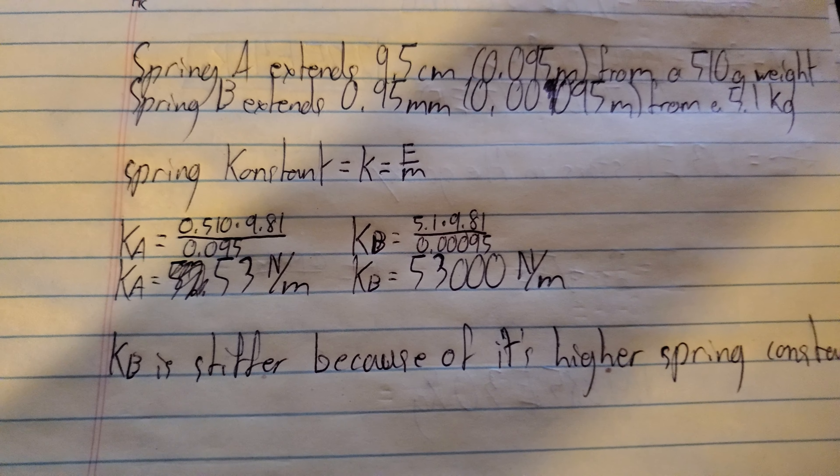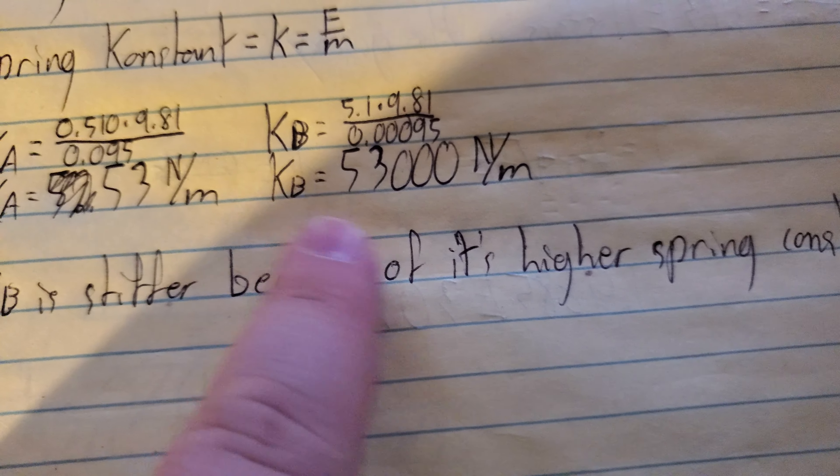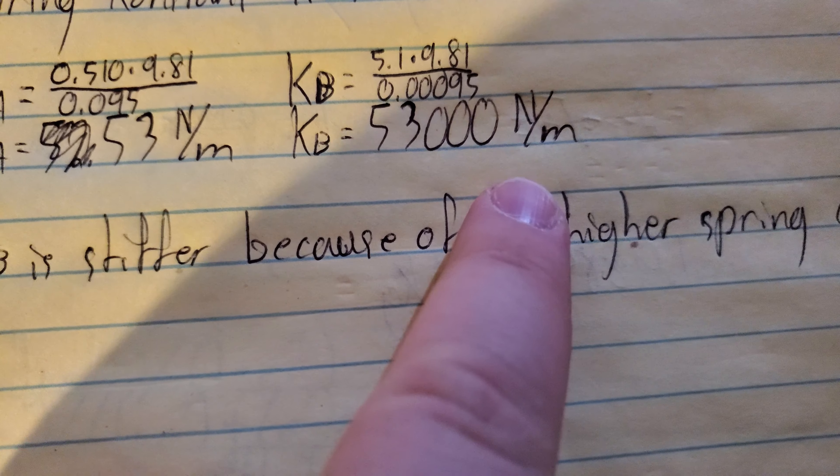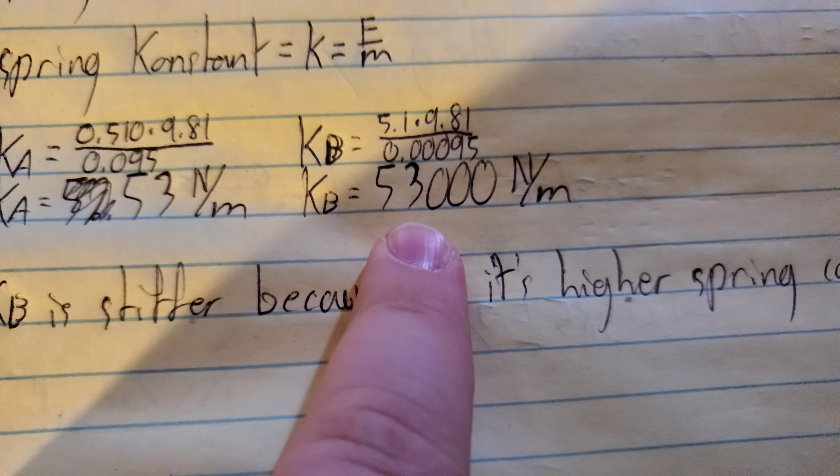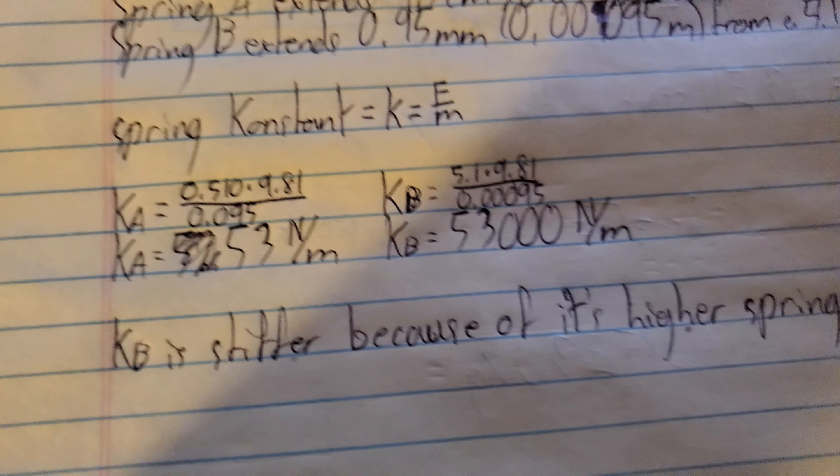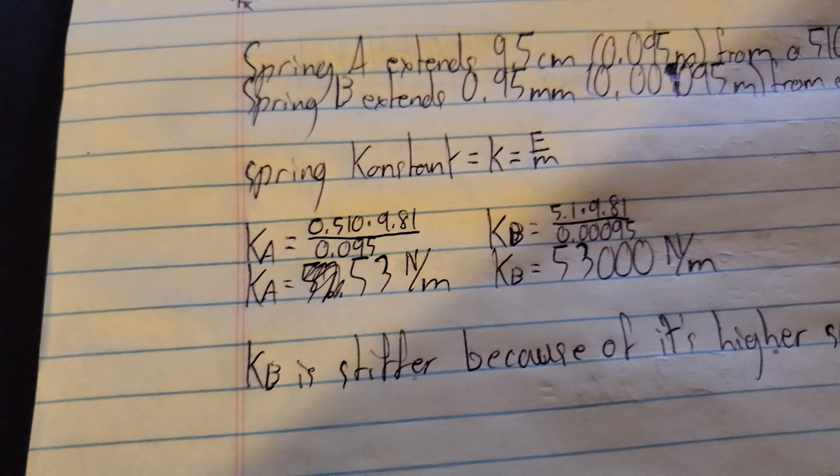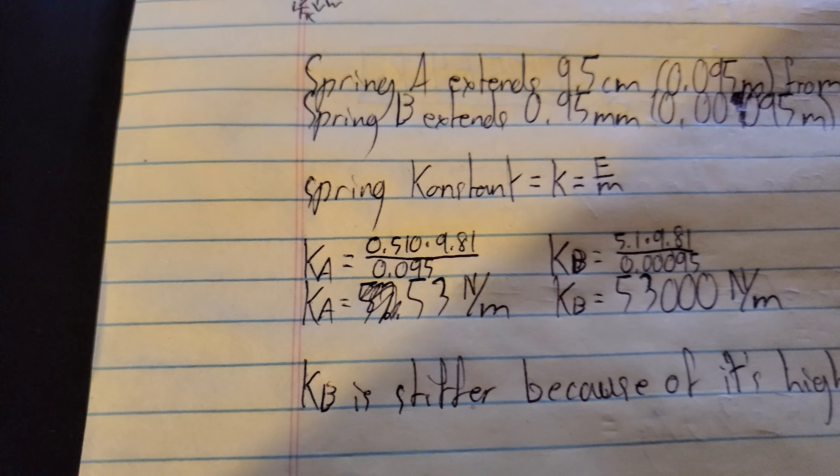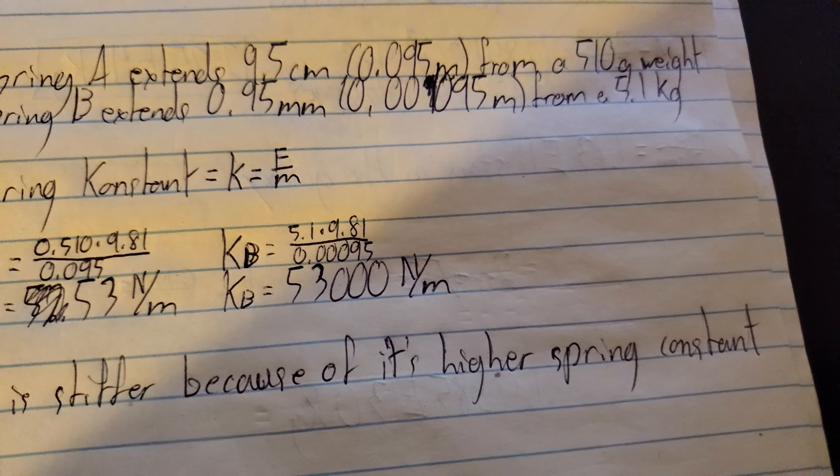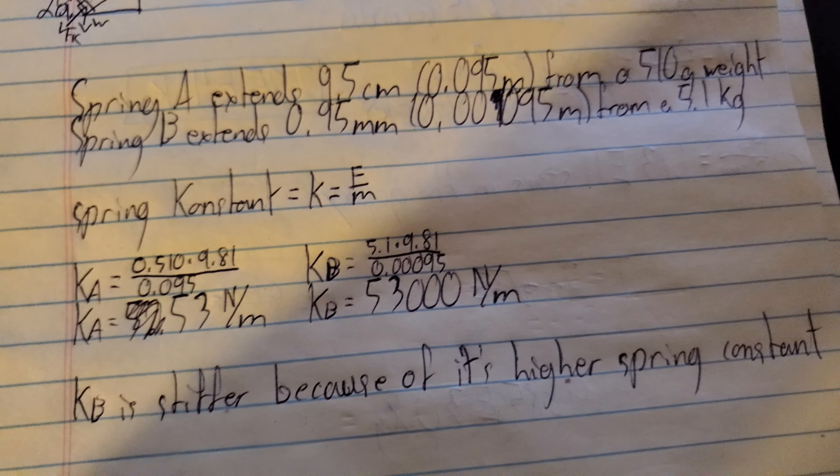So essentially, in order to extend a spring K sub B one meter, you would have to apply 53,000 newtons of force, which is a lot. One newton is about 4.448 pounds. So if you want to divide that by 4.448, you can see how many pounds it would take to extend that spring one meter.